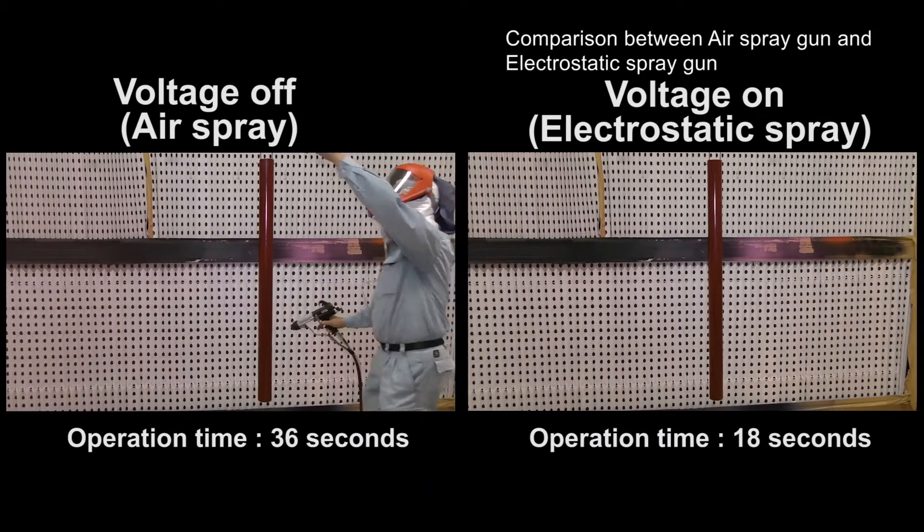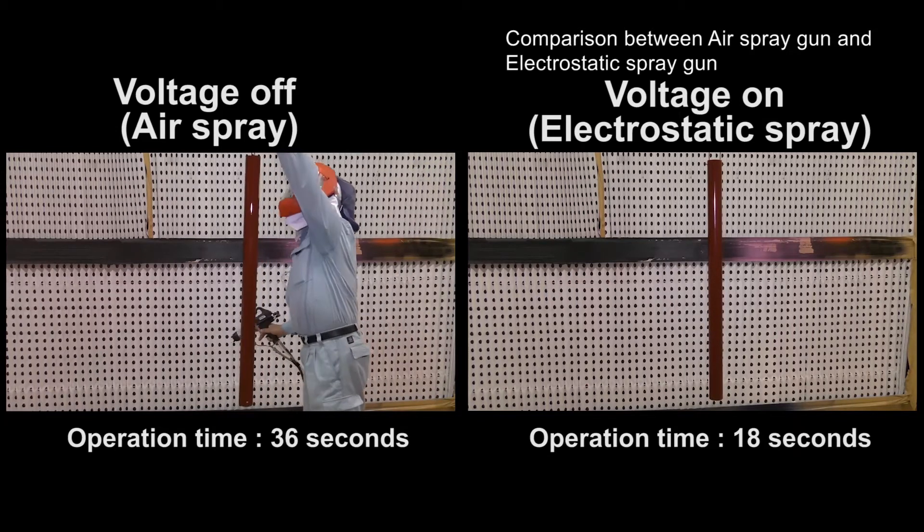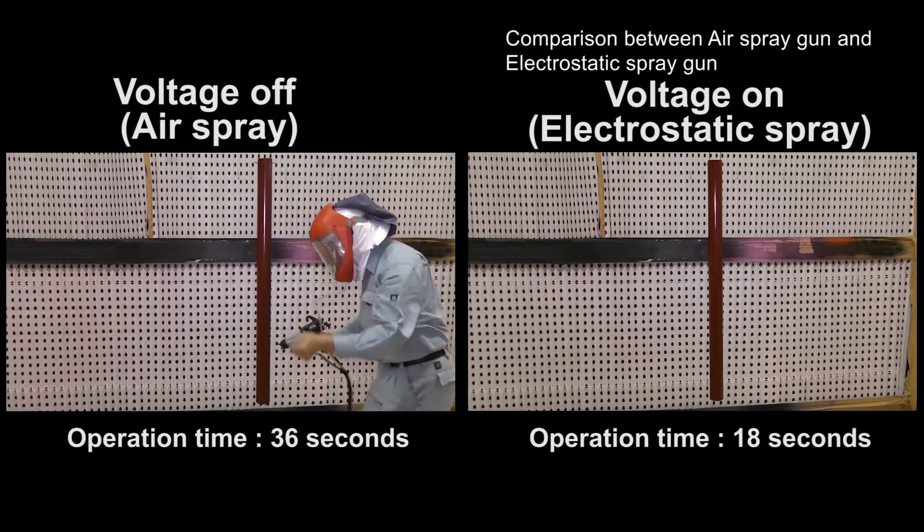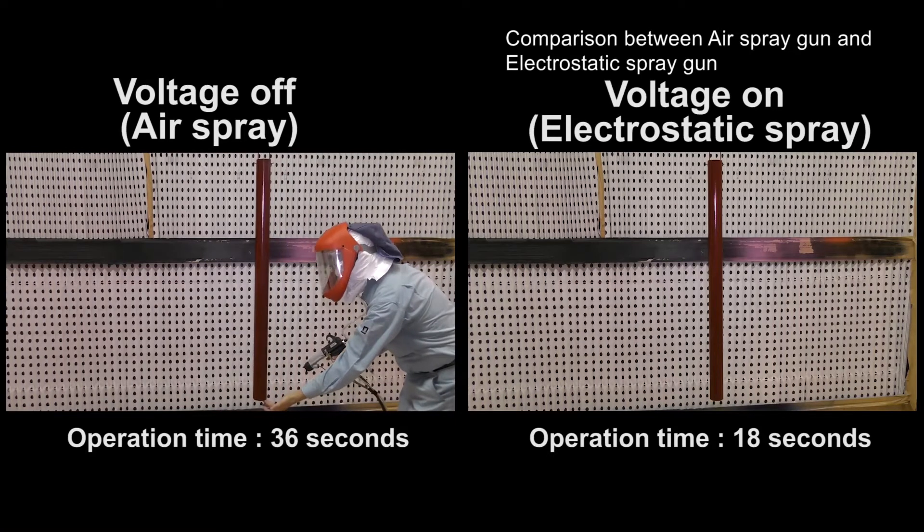You can shorten 18 seconds of working time with electrostatic spray versus air spray. The flow rate is 170 grams per minute, so you can save material at 51 grams this time.